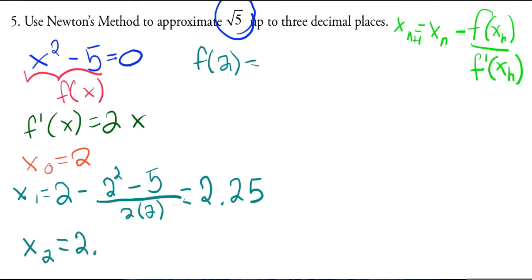And then x sub 2—now I grab this previous one, so I basically just grab this one and do the same thing, just plug in that one. So 2.25 minus 2.25 squared minus 5 over 2 times 2.25.